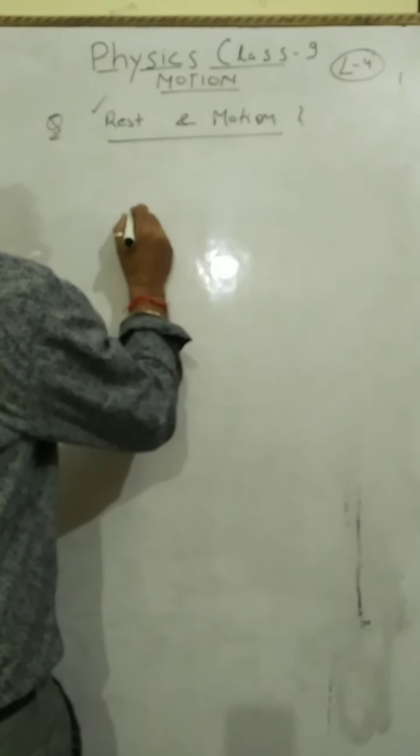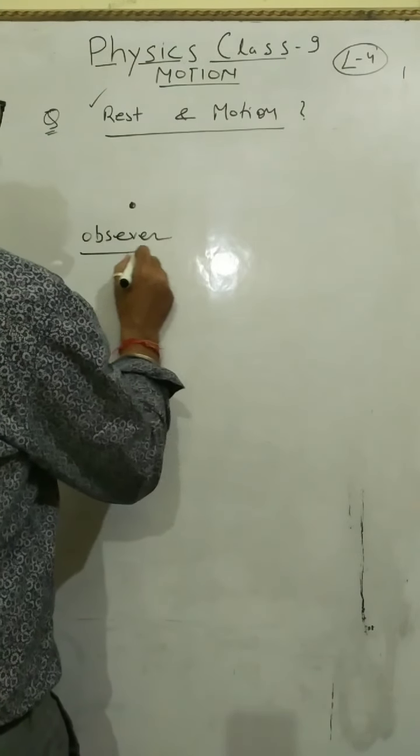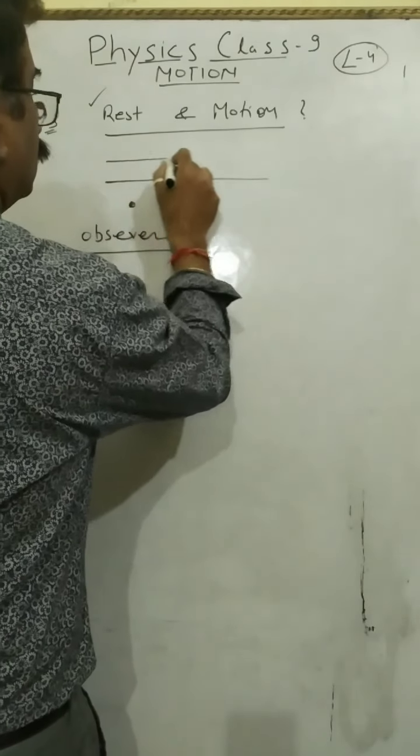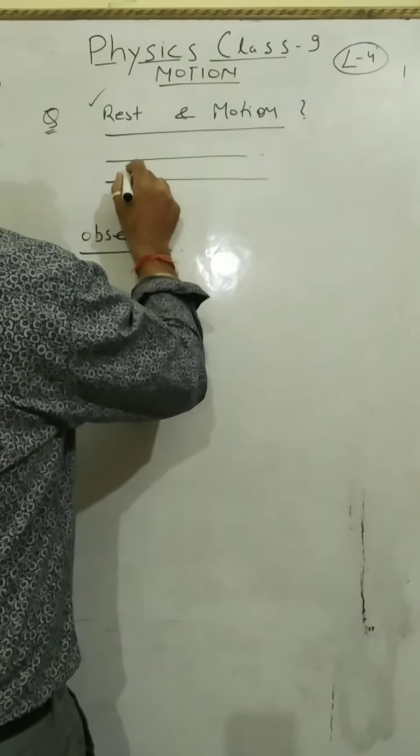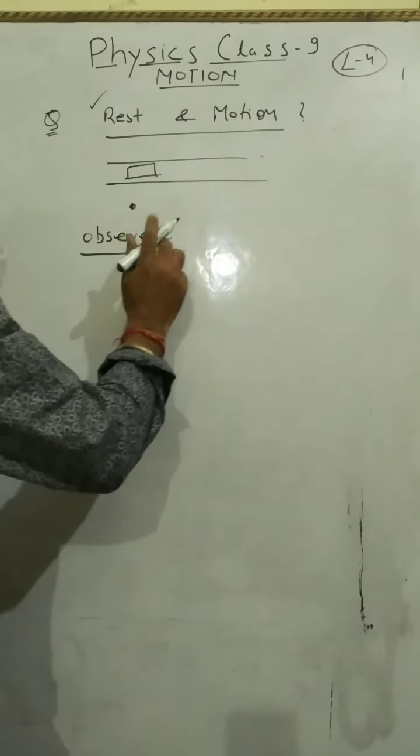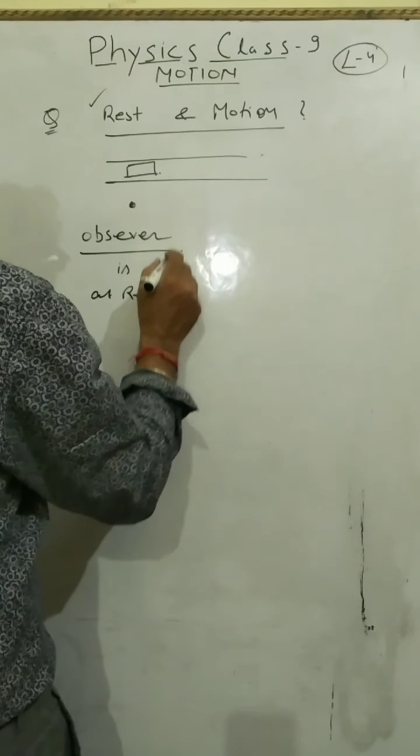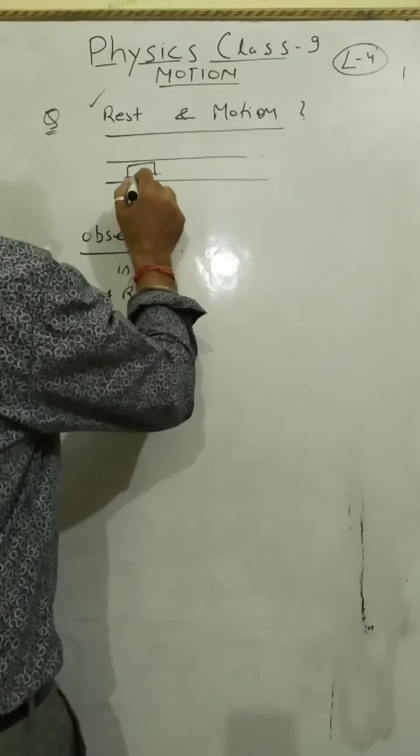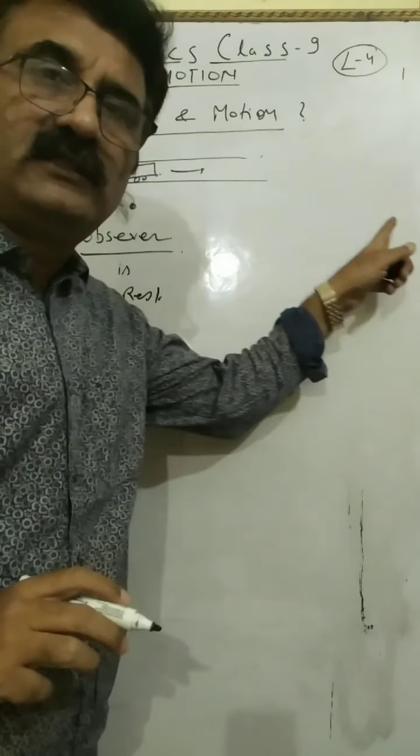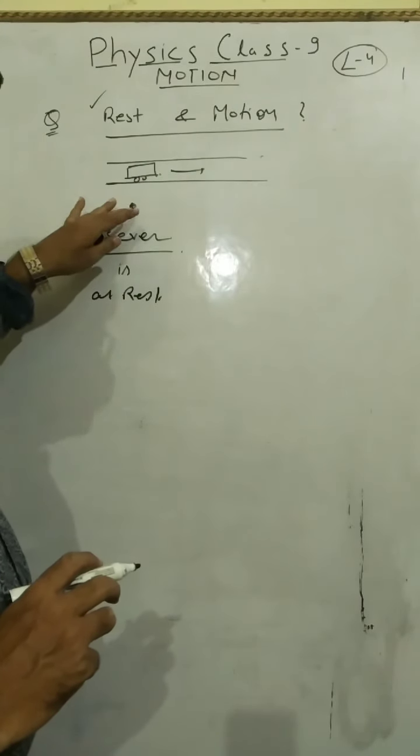So observer, and here is the road. If observer is at rest and this car is moving, then he will say object is in motion. So here we are comparing the two things with respect to this observer.